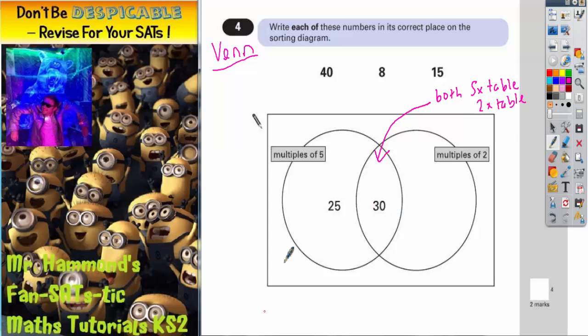A common misconception about Venn diagrams in this type of sorting diagram is the bit outside the circles. People don't realise that you can still use the bit outside the circles. In other words, within this rectangle. Well the bit outside the circles but still within the rectangle is neither multiples of 2 nor multiples of 5.